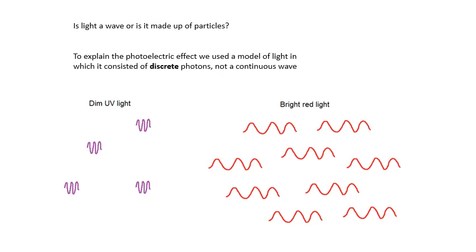In another video, we did the photoelectric effect. And to explain the photoelectric effect, we think of light as being discrete — as in particles, little chunks of energy, these things called photons. So not a continuous wave, but light comes in little packets, like little particles.